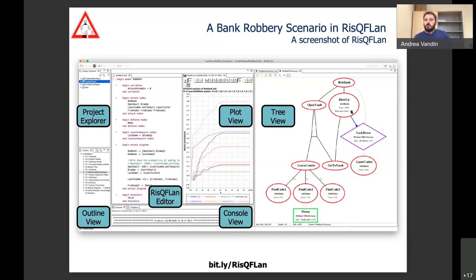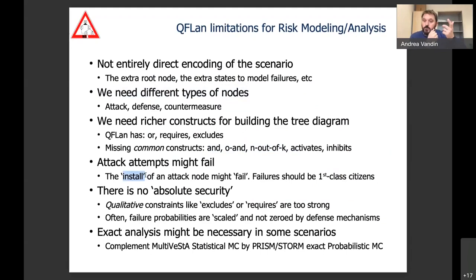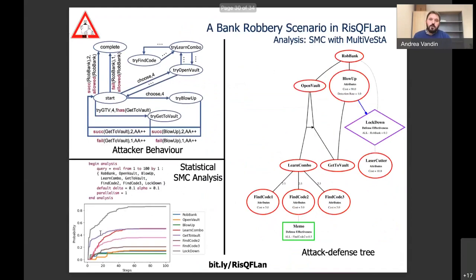In order to model this type of structure we could not use whoFlan directly, for several reasons. We need different types of nodes — attack, defense, and countermeasures — and more constructs like AND, OR, and k-out-of-n. Also, in whoFlan whenever you tried to install a feature you always succeeded, whereas attacks and faults might fail. Many other changes were necessary to be able to model this type of scenario.